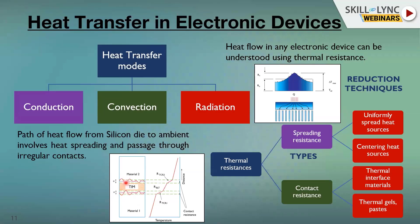After constriction, the heat expands again — a spreading resistance phenomenon. Additionally, when material 1 and material 2 are in contact, air between them also creates resistance. All these resistances to heat flow are combined and called contact resistance. To reduce contact resistance, solutions like thermal interface materials and thermal paste are used, which enable higher z-conductivity.